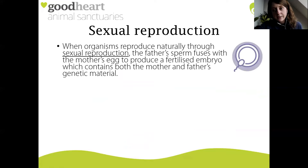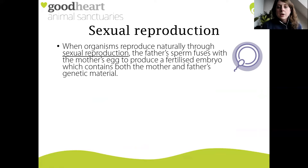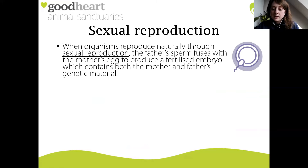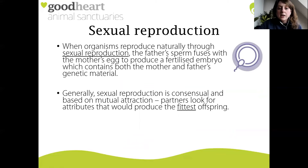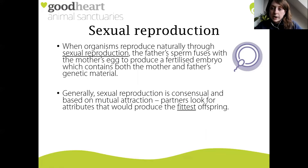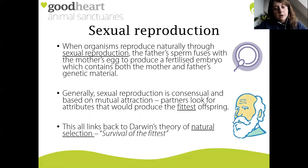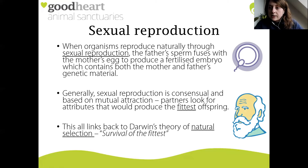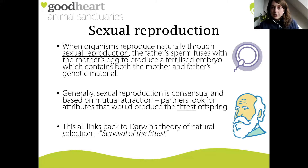To fully understand artificial selection, we need to look at sexual reproduction as a whole. When organisms reproduce naturally through sexual reproduction, the father's sperm fuses with the mother's eggs to produce a fertilised embryo containing both parents' genetic material. Generally, sexual reproduction is consensual and based on mutual attraction. Partners look for attributes that will produce the fittest offspring.